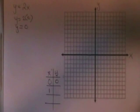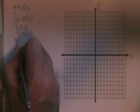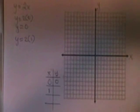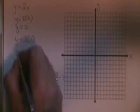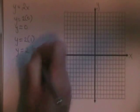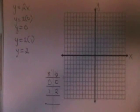If x equals 1, y equals 2x becomes y equals 2 times 1. y equals 2 times 1 becomes y equals 2. We have found the point 1,2.